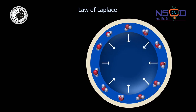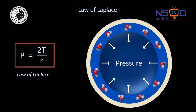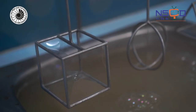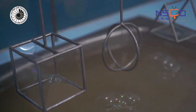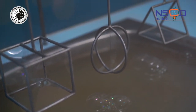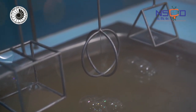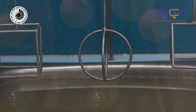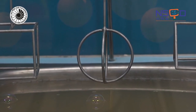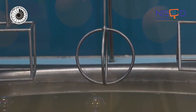Because of the attraction for each other, or cohesion, the liquid molecules take up a shape with the lowest possible surface area for a given volume. And which shape is that? A sphere, of course.